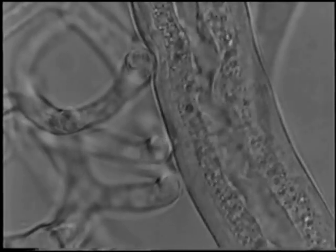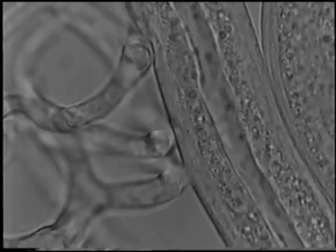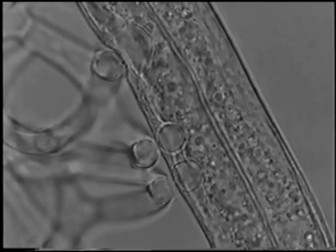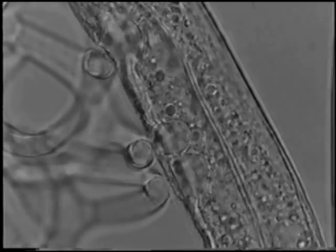The infection tubes penetrate the cuticle of the living prey and swell to form infection bulbs before destruction of the internal organization of the nematode occurs.